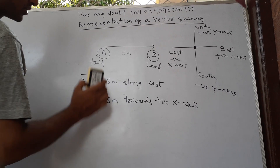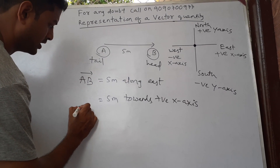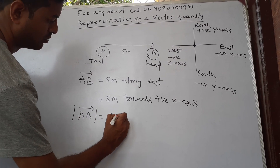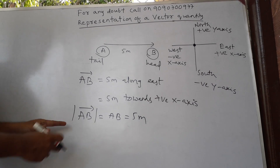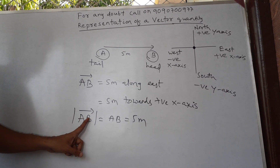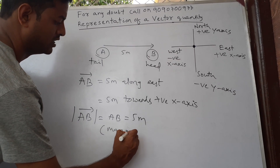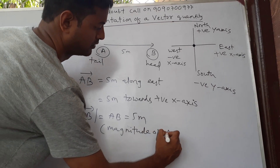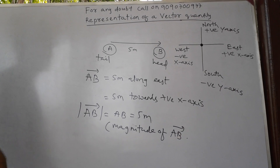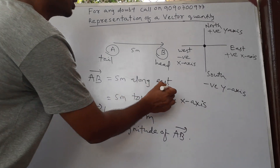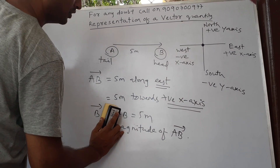Let me also note that the magnitude of vector AB equals |AB| = 5 meters. If I put a modulus sign around any vector it will represent the magnitude of that vector. The magnitude of a vector is a scalar quantity, but here the direction is east or positive x-axis.